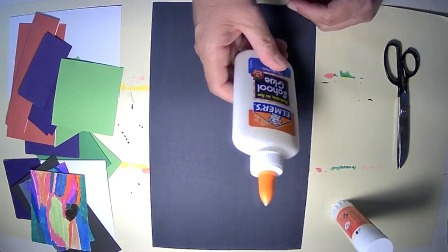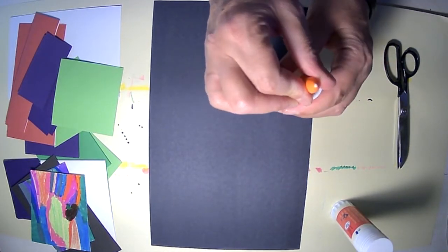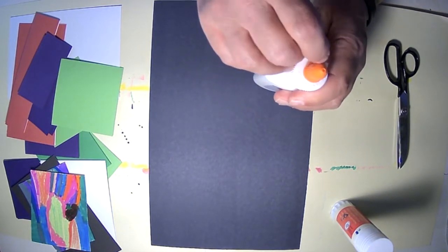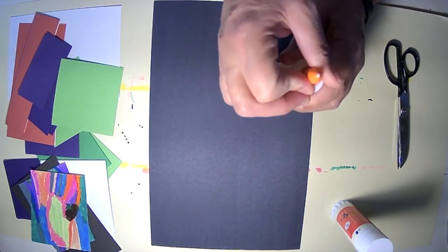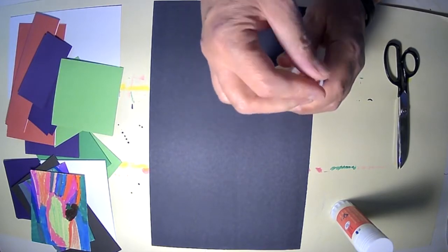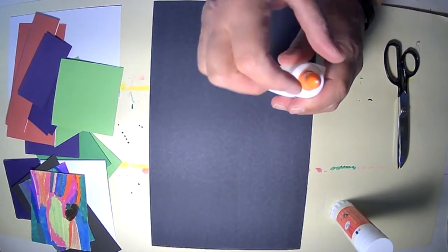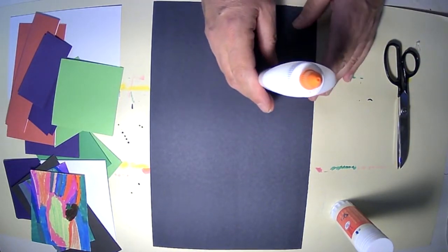This is the Elmer's liquid glue. You have to twist the tippity top open, and you'll see the orange tip. The hole will open up. Sometimes glue gets stuck on top, and you have to peel it off. I'm going to open it. I'm going to show you how to use both glues properly.